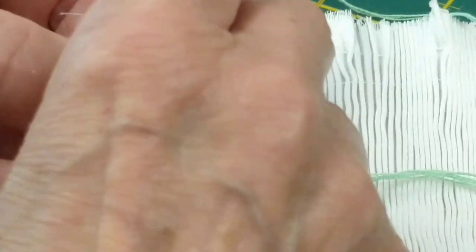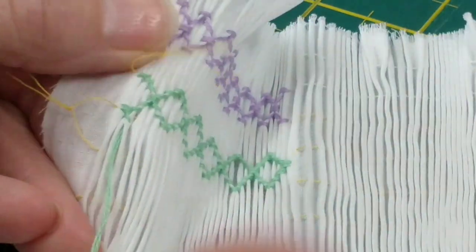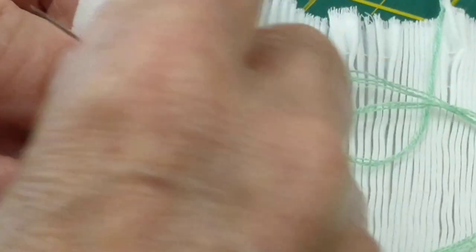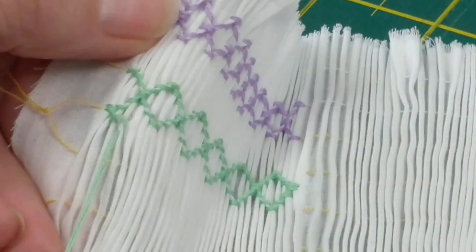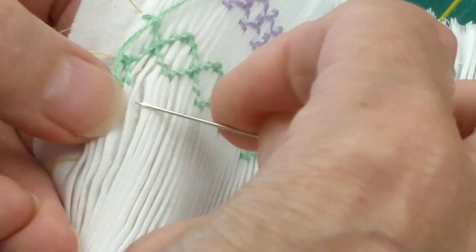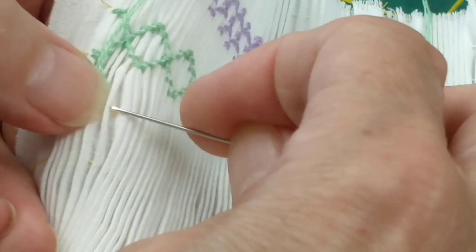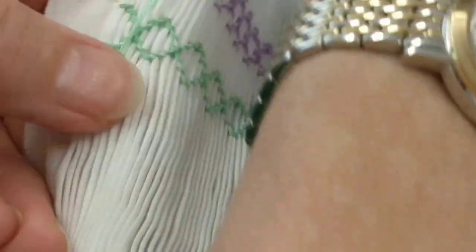So we pick up quarter space on that first pleat, then we're at the halfway point on the next pleat, and then we're at the three-quarter point.